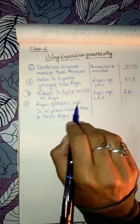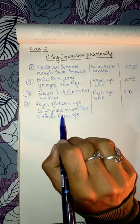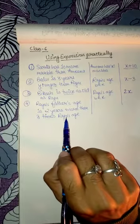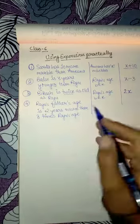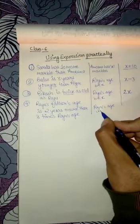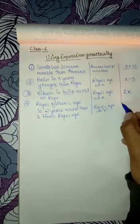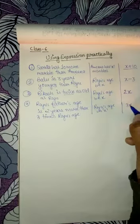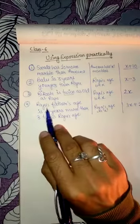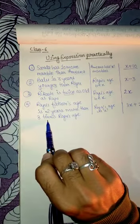In the fourth part, Raju's father's age is two years more than three times Raju's age. Raju's age is X years. First we make it three times: 3X. Then 'more than' means we add 2, so 3X plus 2 will be Raju's father's age. First handle the multiplication, then the addition.